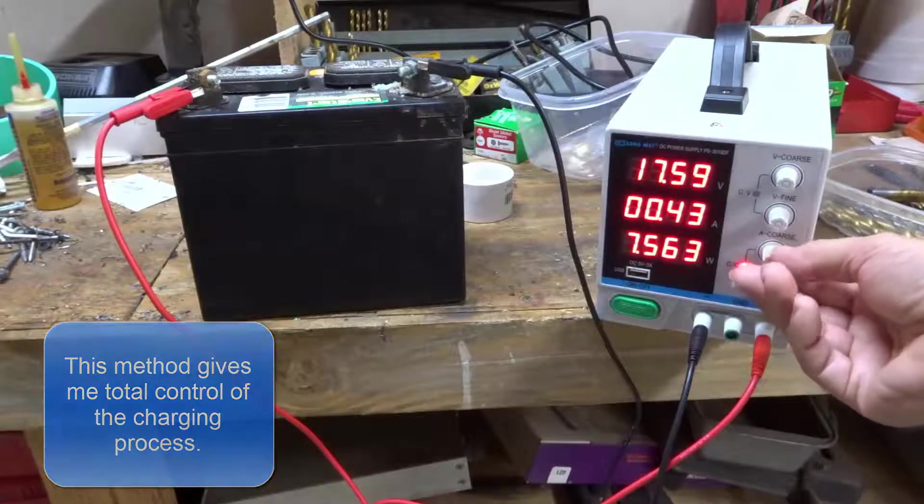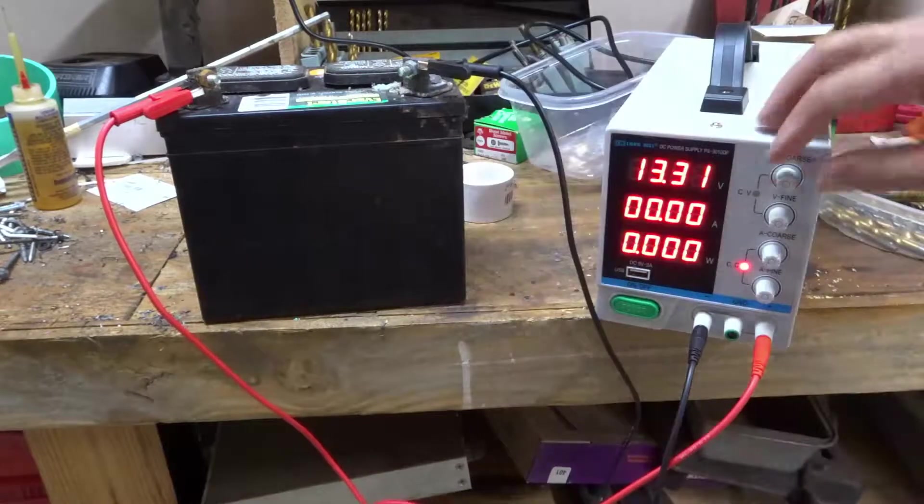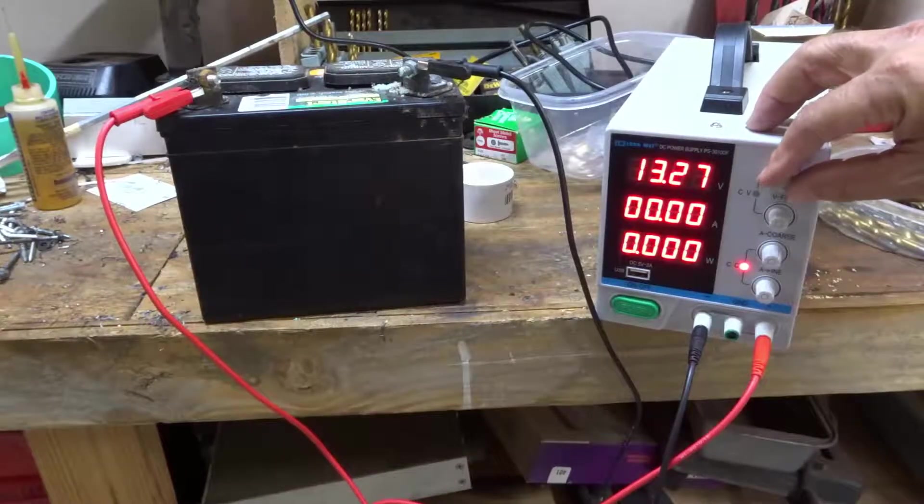So I'm going to shut this back down by turning the current back down to zero. What I've noticed, it notices the battery is 13.3 volts. So I'll bring the voltage up a little bit.